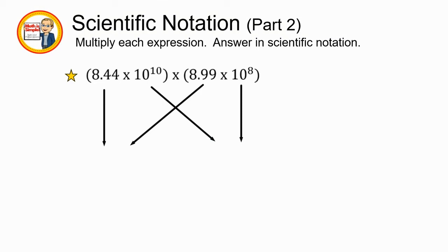So here we go with the first one. We have 8.44 times 8.99 multiplied by 10 to the 10th power times 10 to the 8th power. Remember that anytime we have two parentheses side by side together, we are multiplying these two together.